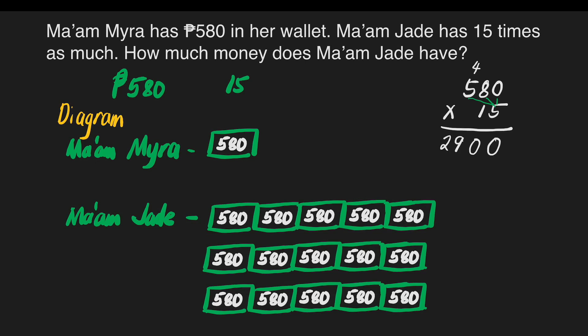Next step is to multiply by 1: 1 times 0 is 0 — write that 0 at the bottom of the second row; 1 times 8 is 8; 1 times 5 is 5. We call these our partial products. After that, we will add the two partial products together.